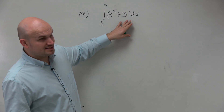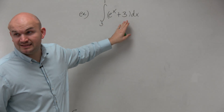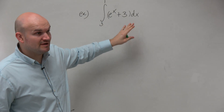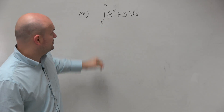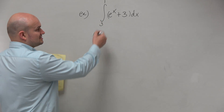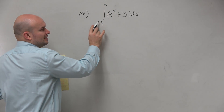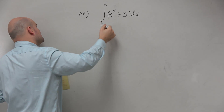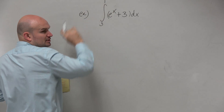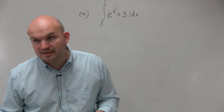If we want to evaluate, we want to make sure we can find the antiderivative. You don't need to separate this — the integral from 1 to 3 of e to the x, plus the integral from 1 to 3 of 3.